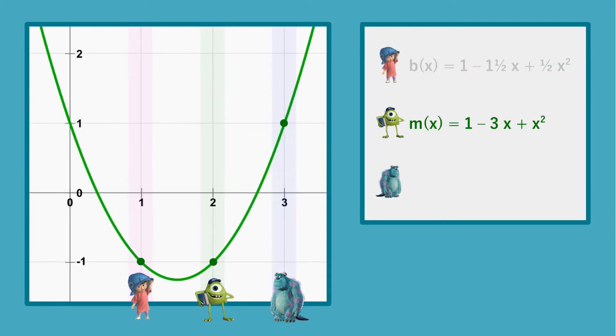Moving on, Mike picks his secret polynomial, again making sure that at x=0 the value of the polynomial is 1, his vote. Each of Boo, Mike and Sully receive the shares of this polynomial.